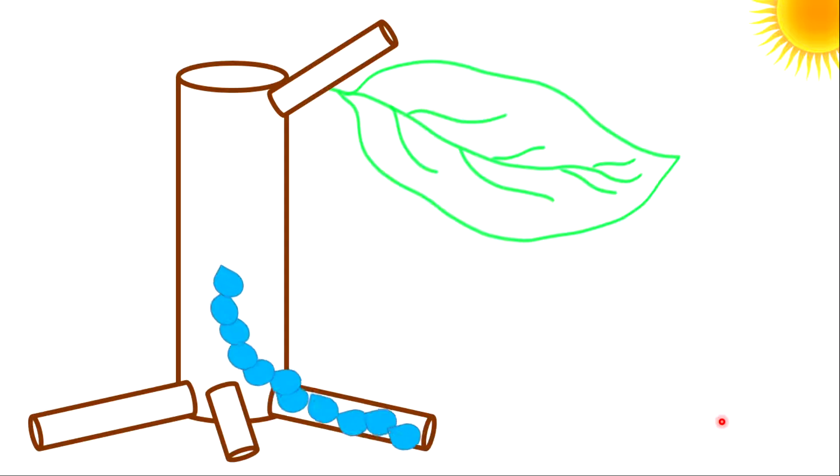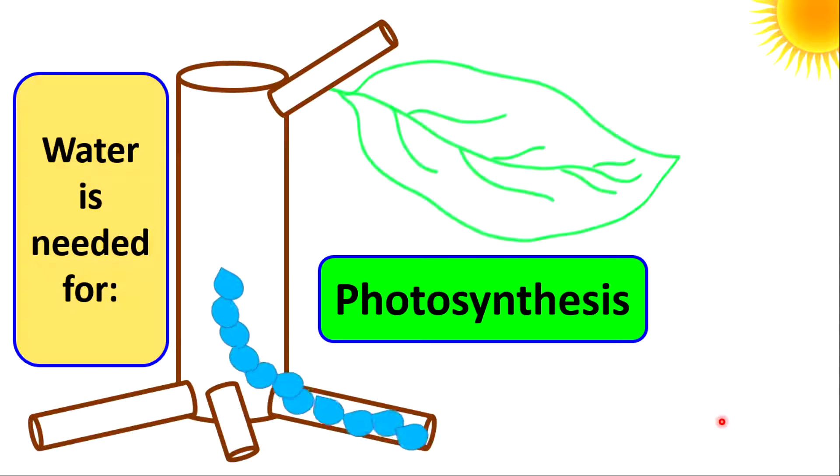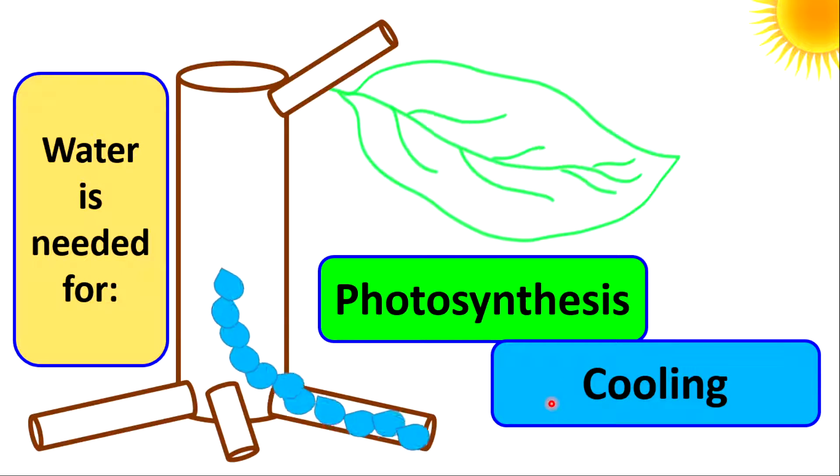Once water has been made available, water is used for many functions and purposes. Water is needed in the plant for photosynthesis, which is the food-making process. Water is also needed to cool the plant, to maintain turgidity within the plant cells, for metabolic functions, which are chemical reactions in the plant, and to absorb and transport minerals from the soil throughout the entire plant.